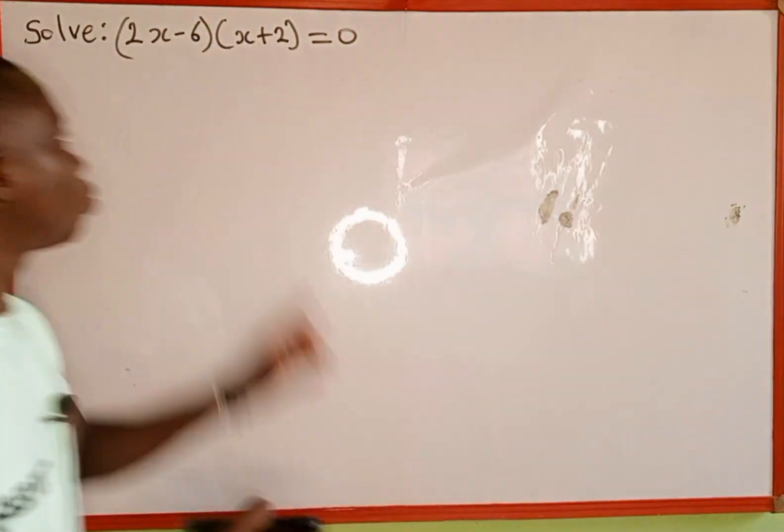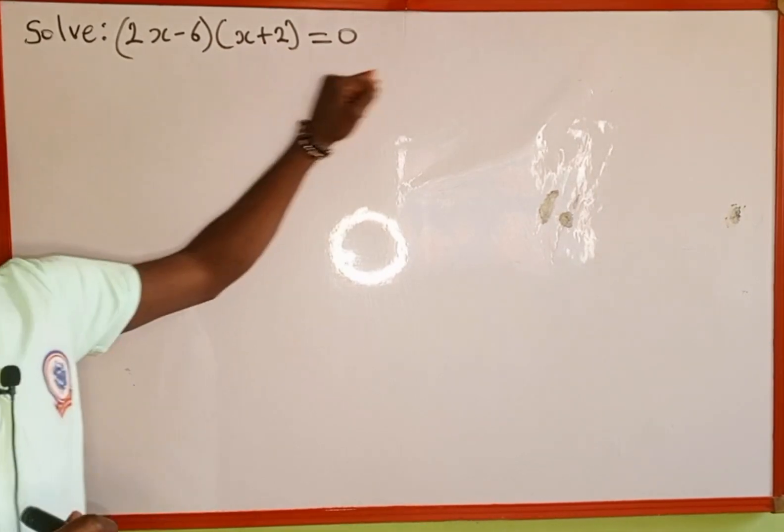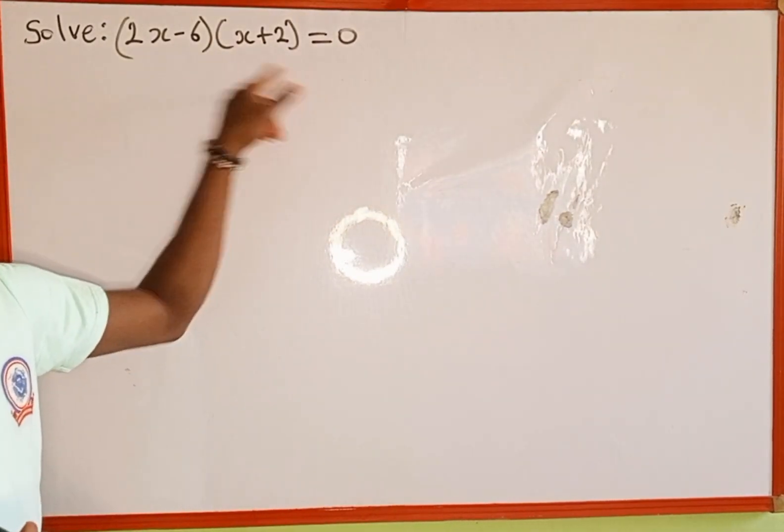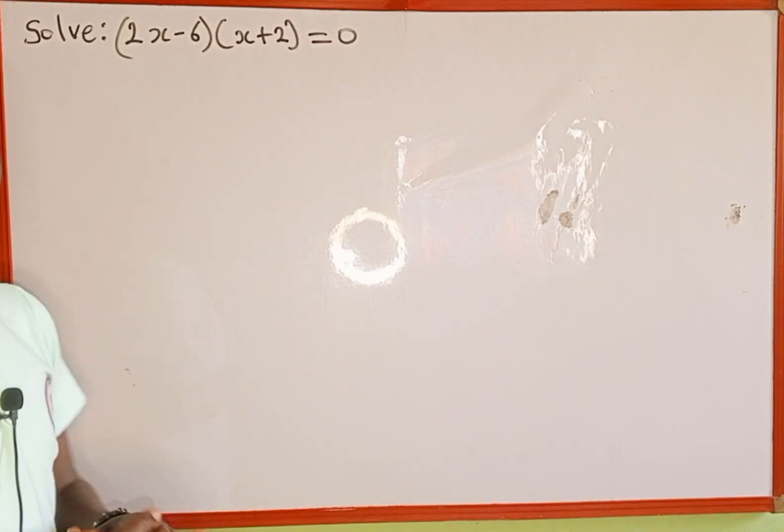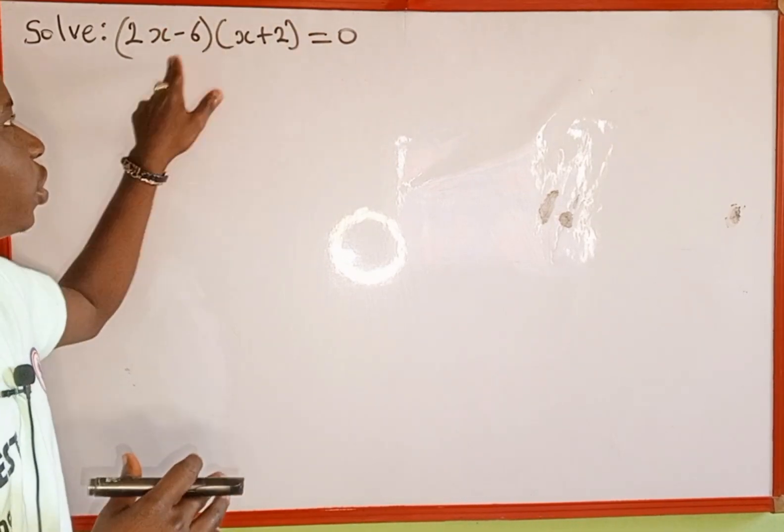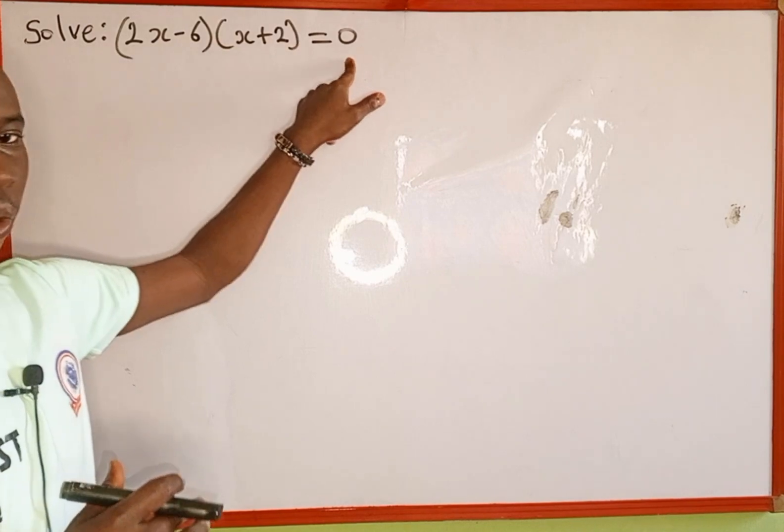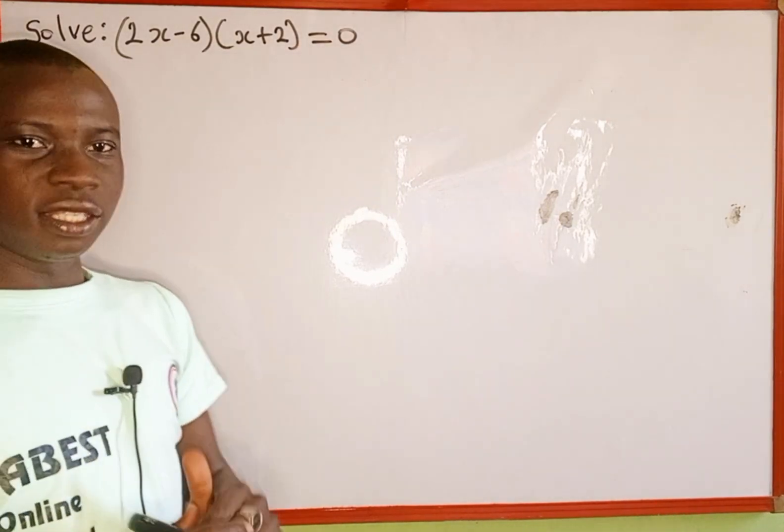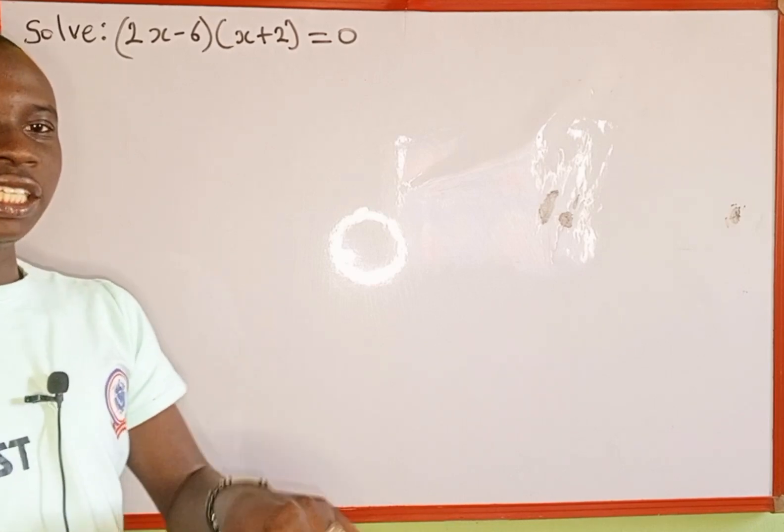The given equation is 2x minus 6 multiplied by x plus 2 is equal to 0. These two brackets mean multiplication, they multiply each other. We recall when two terms are multiplying each other and equal to 0, it's either one of these brackets is equal to 0. Either this one or this is equal to 0. Because anything multiplied by 0 is the same as 0.